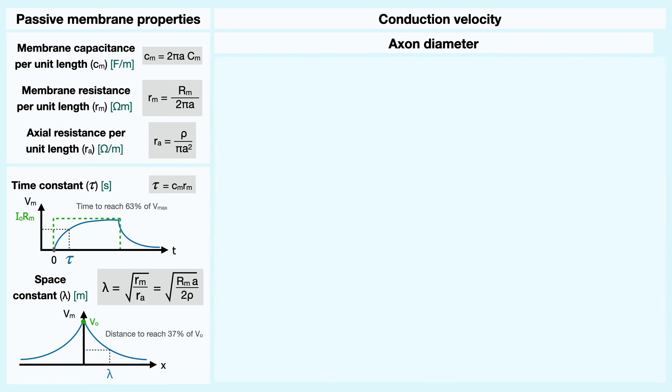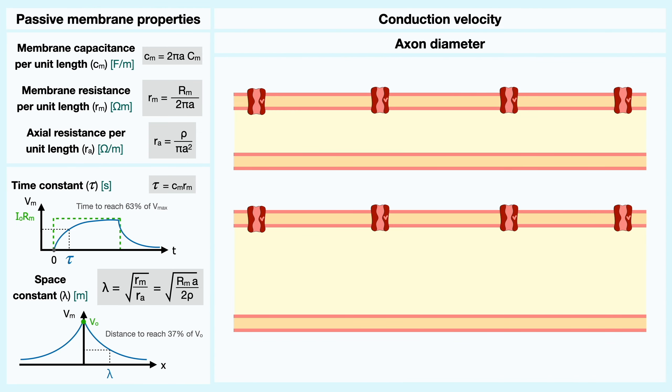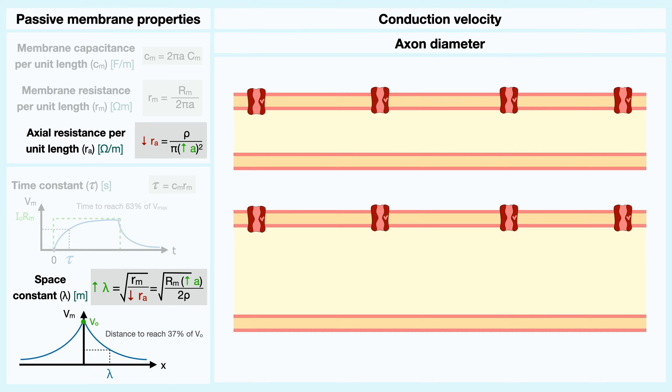Starting with the axon diameter, let's consider two distinct segments of axons with the sole difference that one is larger than the other. In terms of passive membrane properties, a larger diameter will have the effect of decreasing the axial resistance and essentially increasing the space constant.